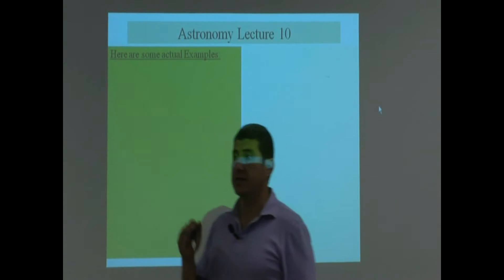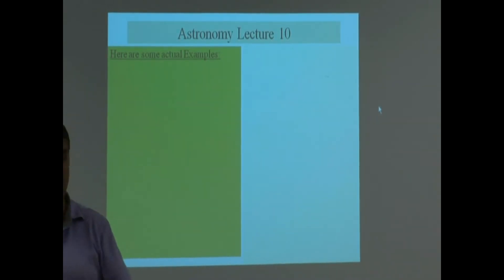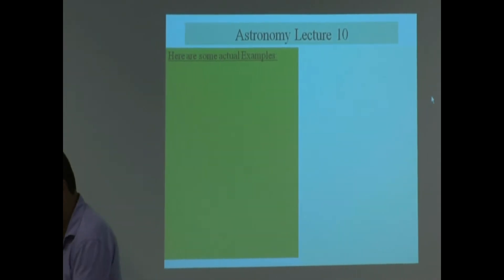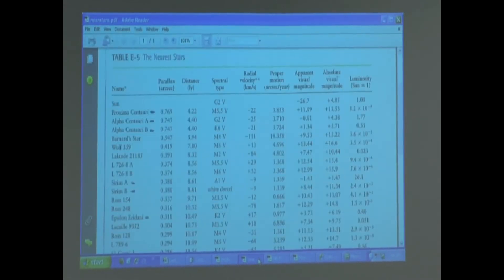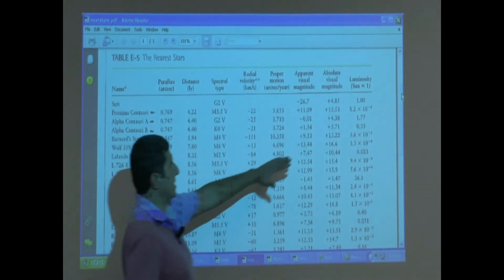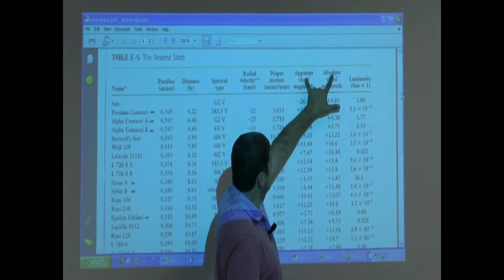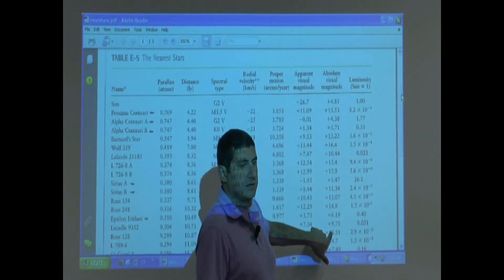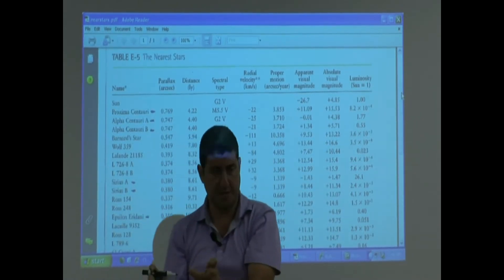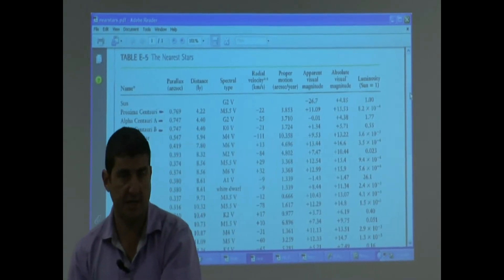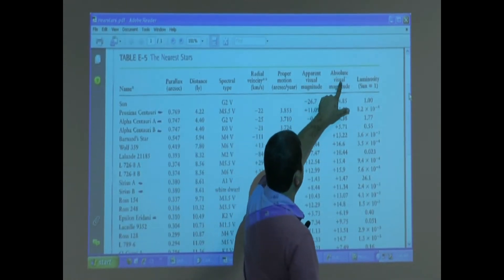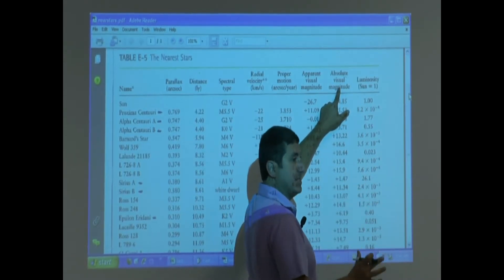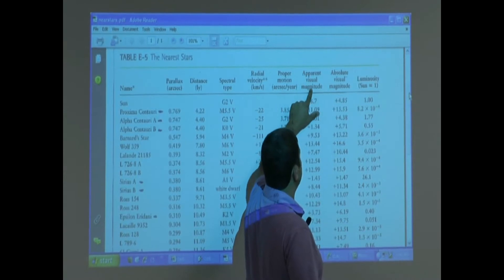Let's look at the Hipparchus scale of brightness for some actual examples of stars. Going back to that list of near stars we discussed — remember we were talking about luminosity? These two columns are the Hipparchus scale. You have a separate Hipparchus scale brightness for absolute luminosity and a separate one for apparent luminosity. Absolute visual magnitude is how bright the star actually is; apparent visual magnitude is how bright it appears to us.